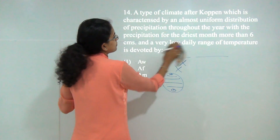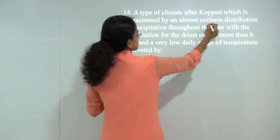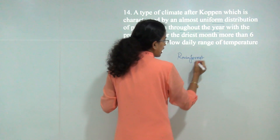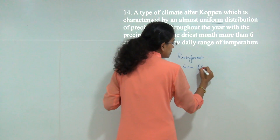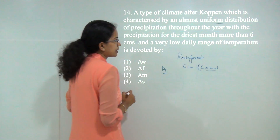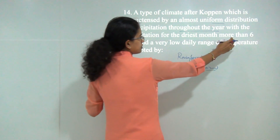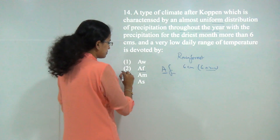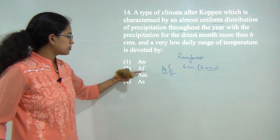Next question: a type of climate under Köppen characterized by uniform distribution of precipitation throughout the year. Uniform precipitation throughout the year is an example of rainforest climate. Under this, rainfall occurs throughout the year and even the driest month would have more than 6 centimeters or 60 millimeters of rainfall. So the climate type would be tropical, and the Köppen designation for tropical rainforest is AF. So the answer here would be AF.